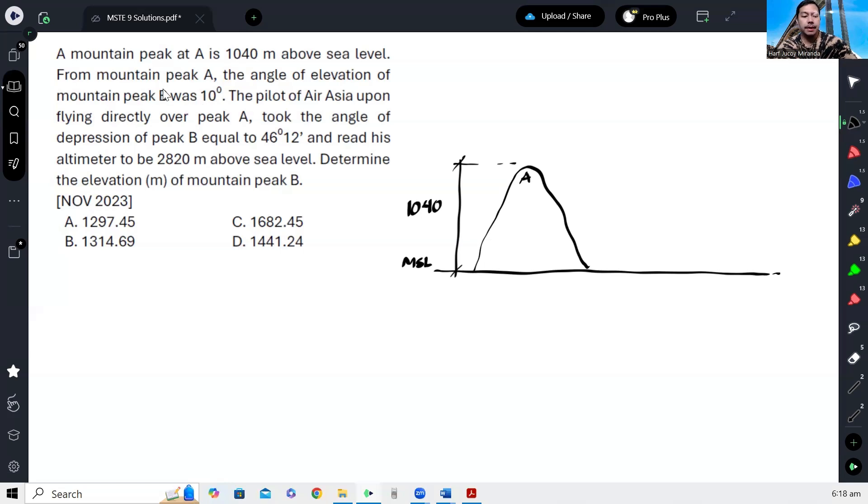When you have an observer at A, the angle produced is an angle of elevation, so that means B is higher. If it were angle of depression, it would mean B is lower. So let's say this is B.